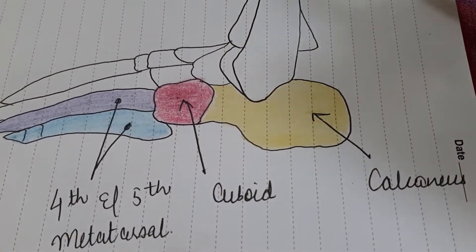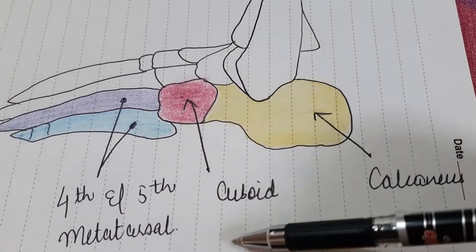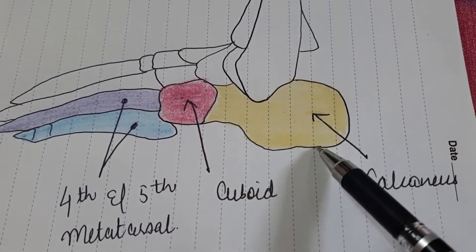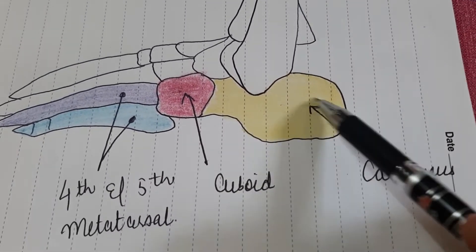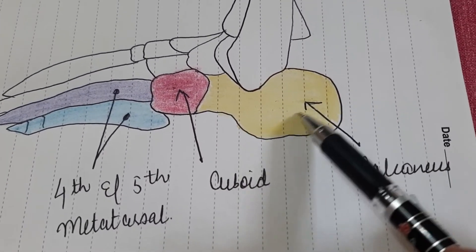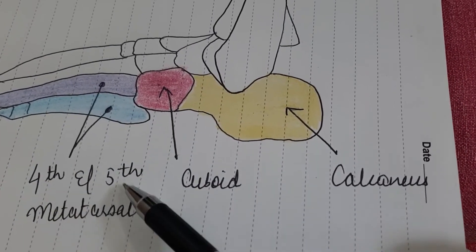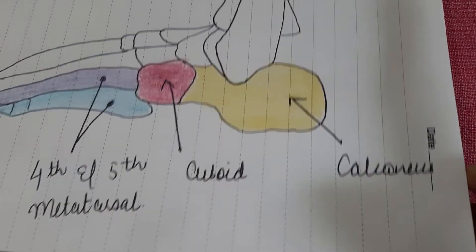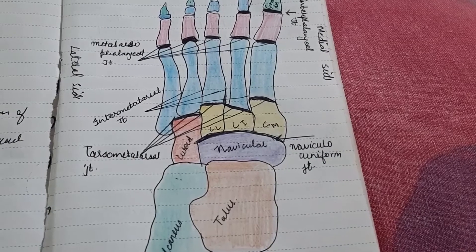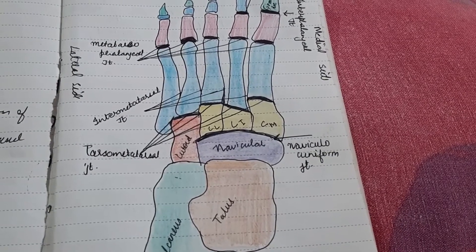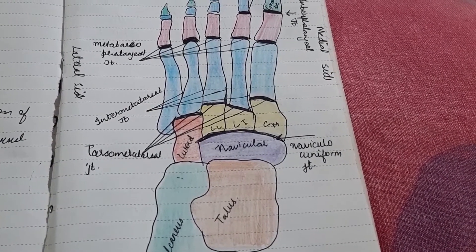In the lateral aspect of the foot, you are going to see the following bones: the heel bone, which is the calcaneus, the cuboid, and the fourth and fifth metatarsals. So we have seen all the aspects of the foot.